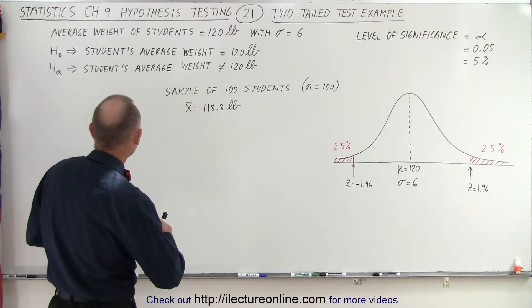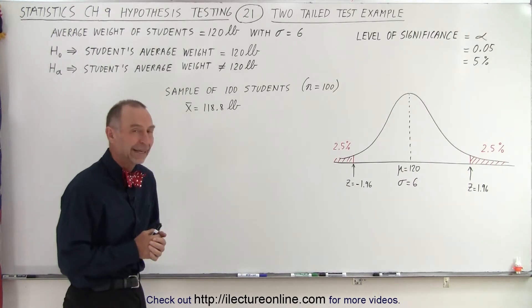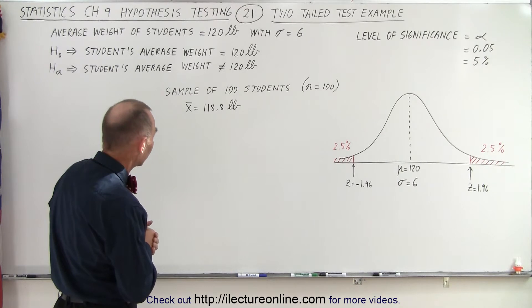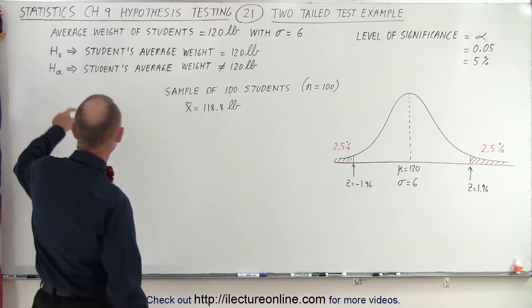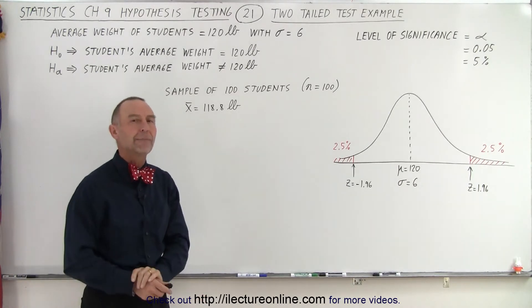So let's say that we make a claim that the average weight of students equals 120 pounds with a standard deviation equal to 6 pounds. And we set up a null hypothesis where we claim that student's average weight is 120 pounds.